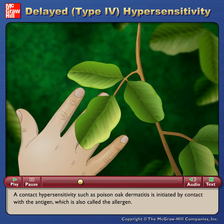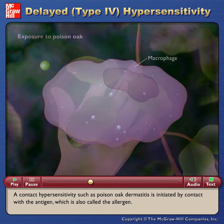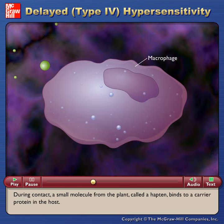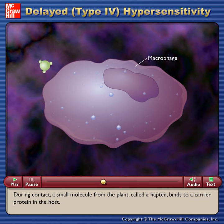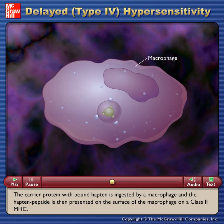A contact hypersensitivity such as poison oak dermatitis is initiated by contact with the antigen, which is also called the allergen. During contact, a small molecule from the plant, called a hapten, binds to a carrier protein in the host. The carrier protein with bound hapten is ingested by a macrophage, and the hapten peptide is then presented on the surface of the macrophage on a class II MHC.